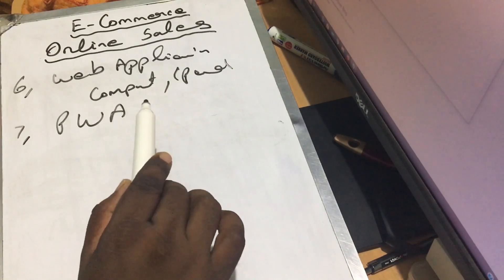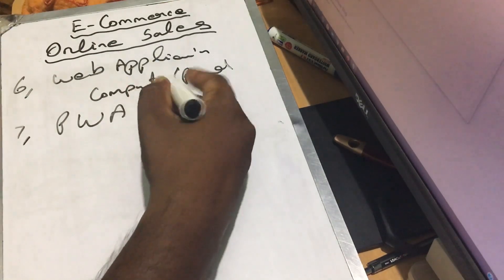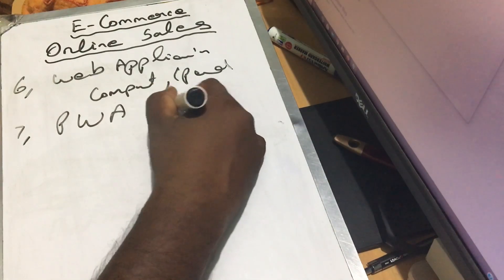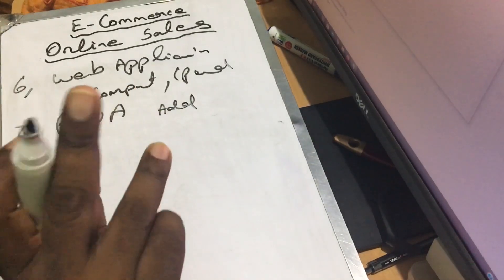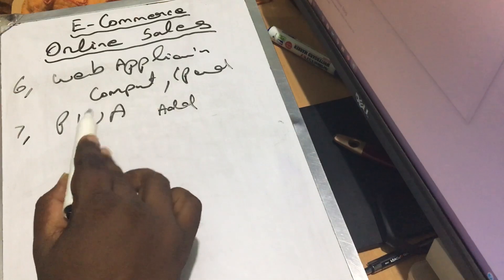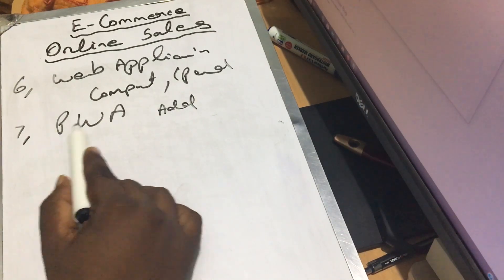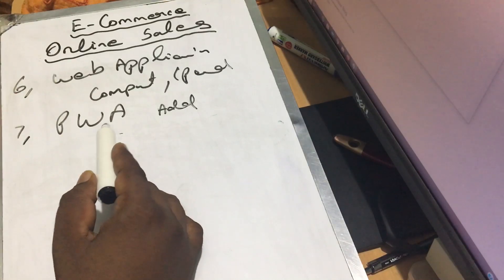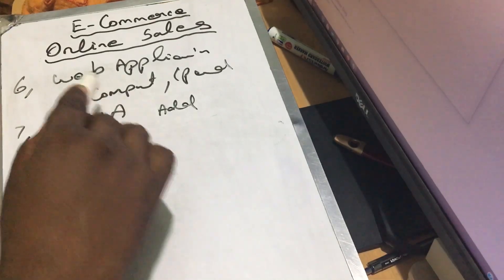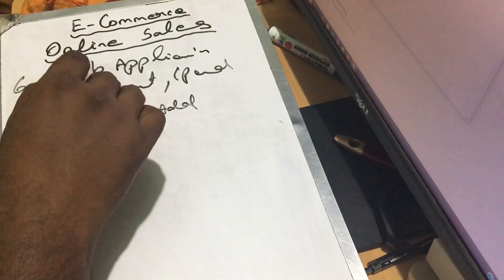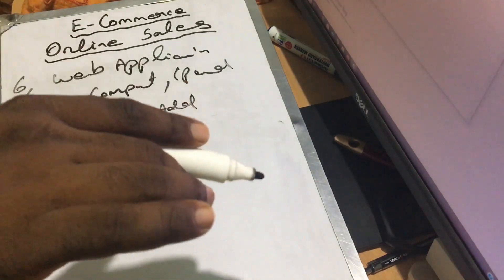If you have a mobile application, you will be able to open it on your mobile screen. If you add a shortcut, you will be able to install a mobile application and open it like an app. This is the Progressive Web App. If you develop a Progressive Web Application, it will be cheaper. But with a normal web application, you can handle a lot of items.